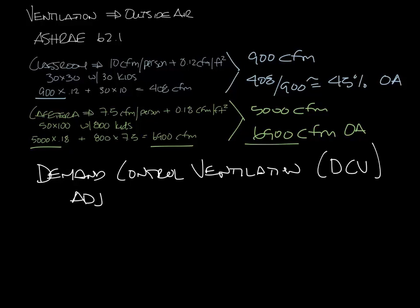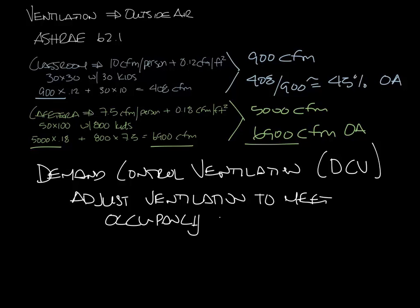Demand control ventilation is adjusting the ventilation air in a space to meet the occupant demand. So in the cafeteria, if there are no occupants, you wouldn't need to bring in the full 6,900 CFM of fresh air. So let's look at why you want to vary the ventilation air based on demand.